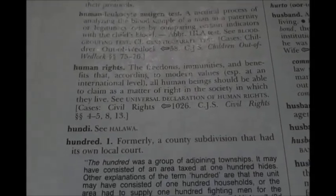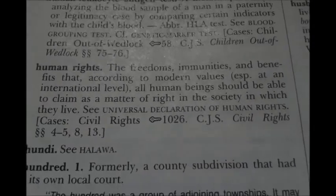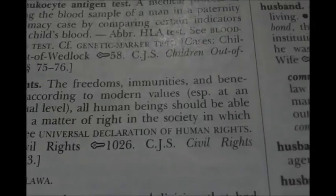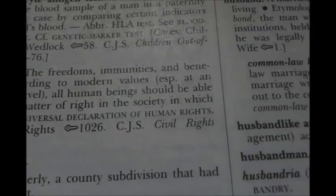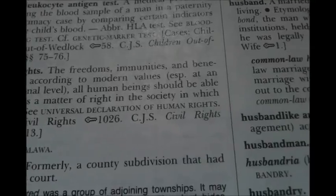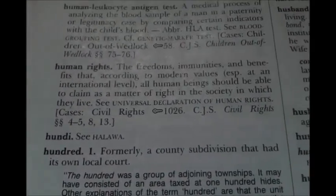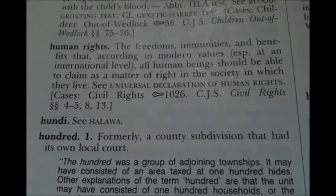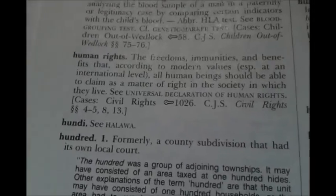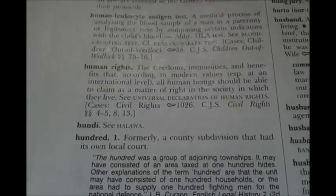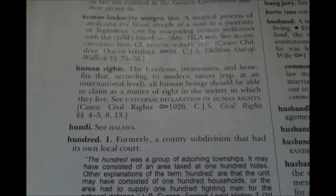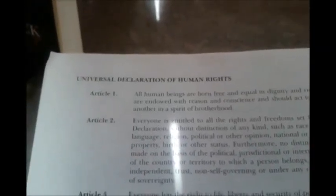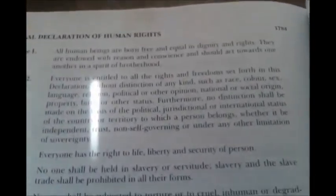Now we're at Human Rights. The freedoms, immunities, and benefits that, according to modern values especially at an international level, all human beings should be able to claim as a matter of right in the society in which they live. See the Universal Declaration of Human Rights. You can find this in the back of the Black's Law Dictionary. These are your human rights guaranteed by the UN.